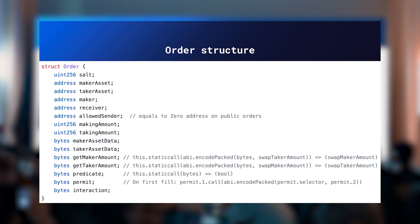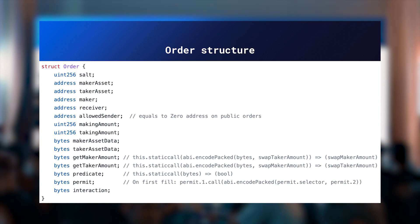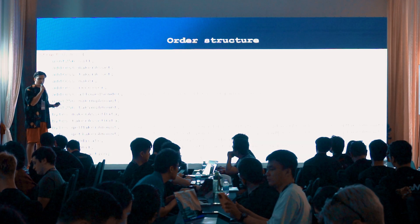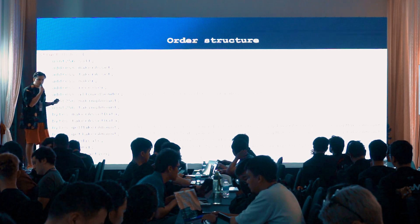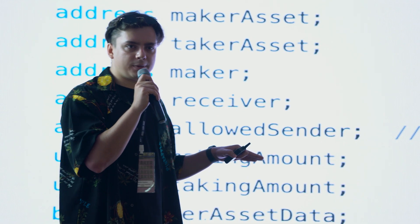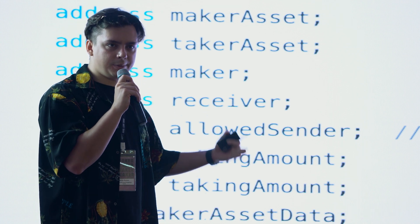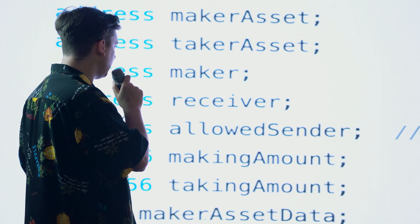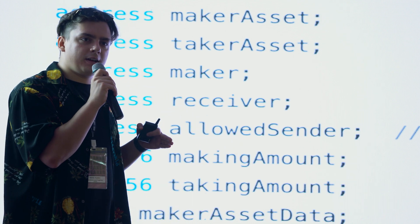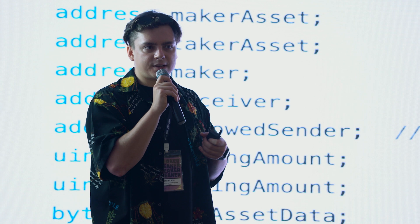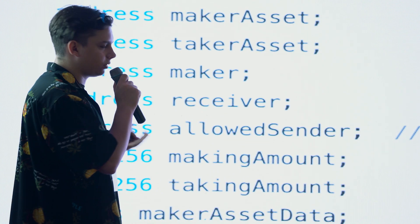I want to pay attention to some key fields: making amount, taking amount, take asset data, and make asset data. These fields allow you to specify the rate of your limit order. Sometimes you have a static rate — it doesn't matter how much you fill this limit order, the rate will be the same. But if you implement functions using make asset data and take asset data, and get making amount and get taking amount, you can specify the rate for each moment of filling the limit order. That basically means you can build, for example, a Dutch auction on our limit order protocol.